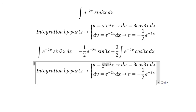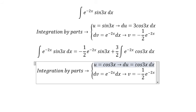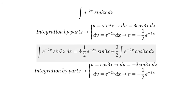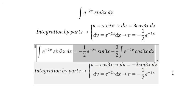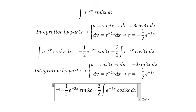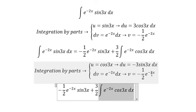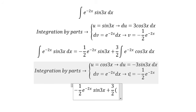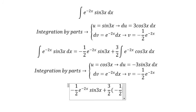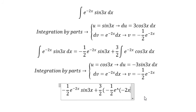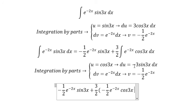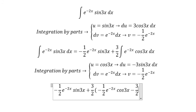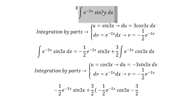We change for both sides: this one gives us negative 3 sine 3s. Applying integration by parts again, we get u multiplied with v. We have negative times negative, which gives us positive, meaning this term should be negative. So we get 3 over 2, and we apply integration by parts similarly for this one.